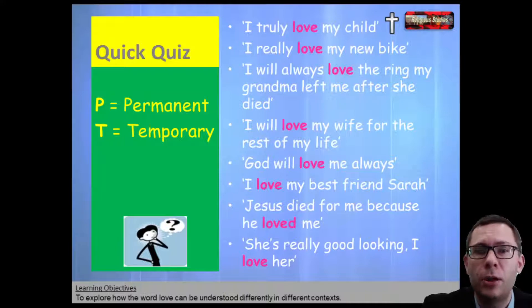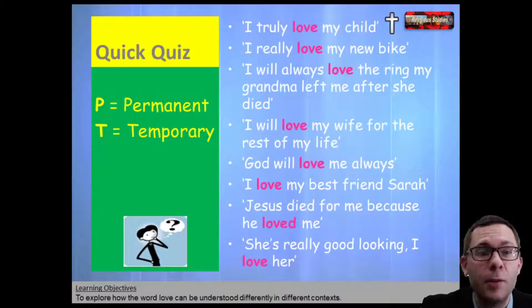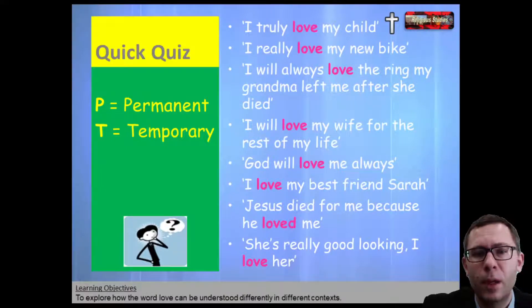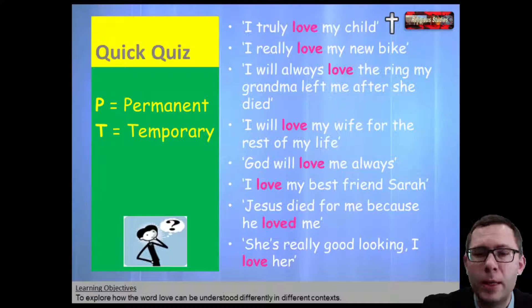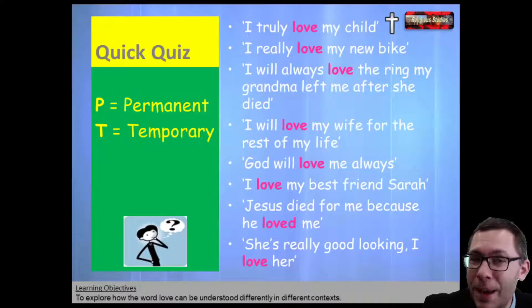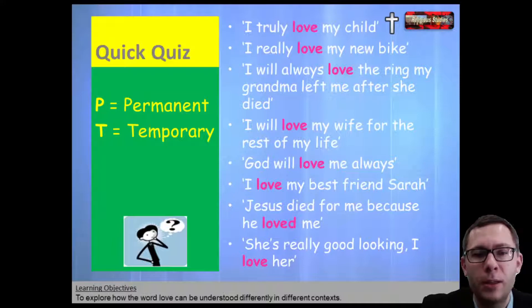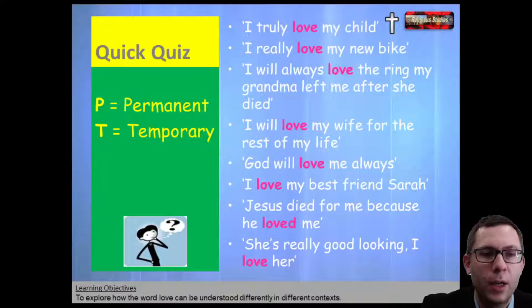So let's just see if we can identify which ones are permanent and which ones are temporary. Truly love my child — hopefully that's permanent. I really love my new bike — that's temporary because you're going to get rid of your bike; it's new. Grandma's ring — hopefully that's permanent. I will love my wife for the rest of my life — hopefully permanent. God will always love me — permanent. I love my best friend Sarah — I'm going to suggest possibly temporary because you could have a falling out. Jesus died for me because he loved me — that would be permanent. And she's really good looking, I love her — honestly, that's definitely temporary; that bubble will soon burst. But you could obviously argue against me with any of that.